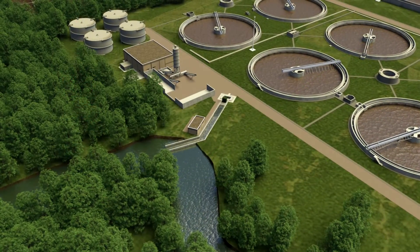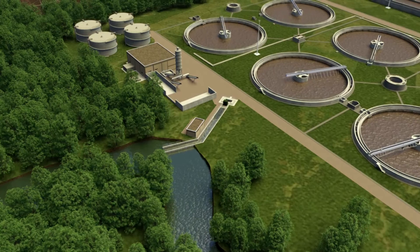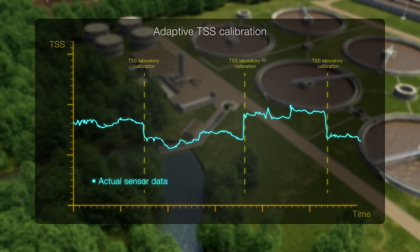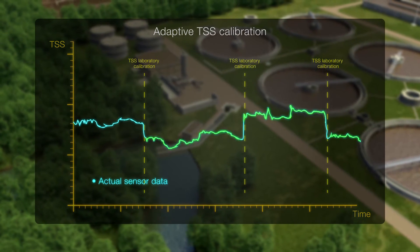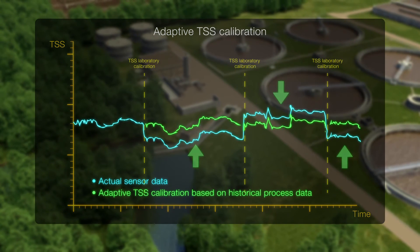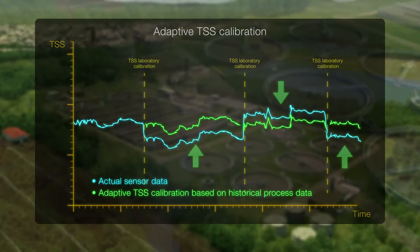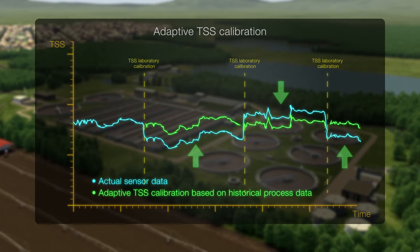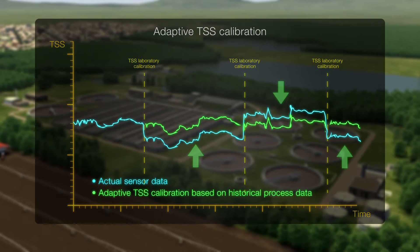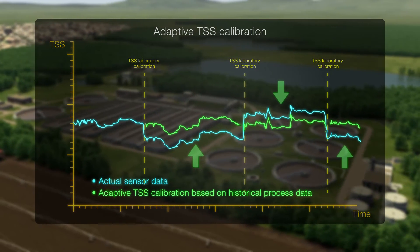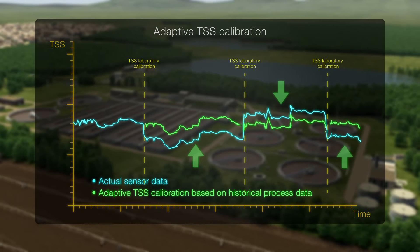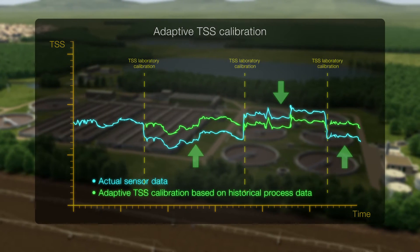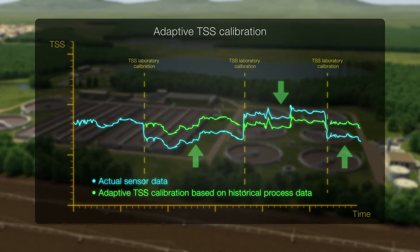The ATS-430's adaptive TSS calibration feature enables the sensor to intelligently calculate the TSS conversion based on historical process data. This feature provides a smooth TSS conversion and avoids sudden changes in TSS calibration coefficients, often caused by non-representative sampling or erroneous lab results.